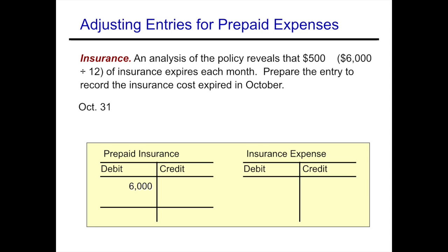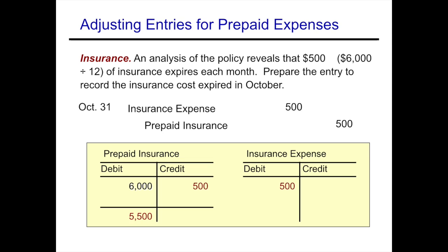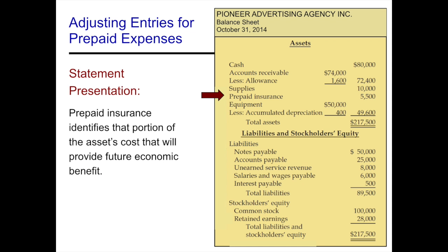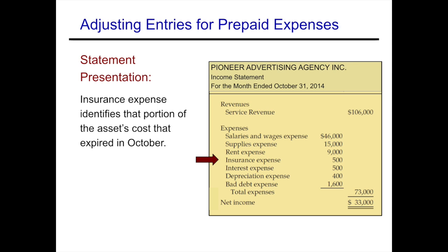An analysis of the policy reveals that $500 — $6,000 divided by 12 — of insurance expires each month. At the end of October we journalize one month of used-up prepaid insurance: debit insurance expense for $500 and credit prepaid insurance for $500. Now we have $5,500 left in that asset account. On the balance sheet, prepaid insurance shows $5,500 still providing future economic benefit; on the income statement, insurance expense shows the $500 used up in October.